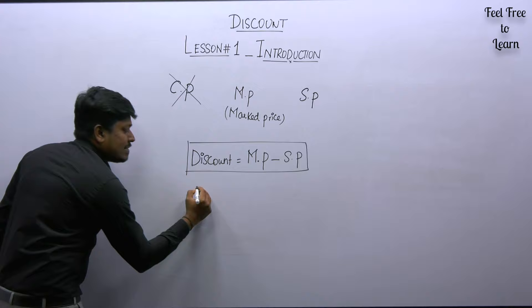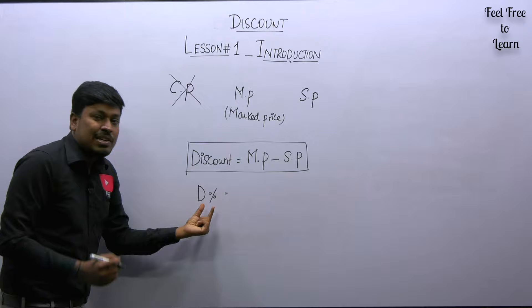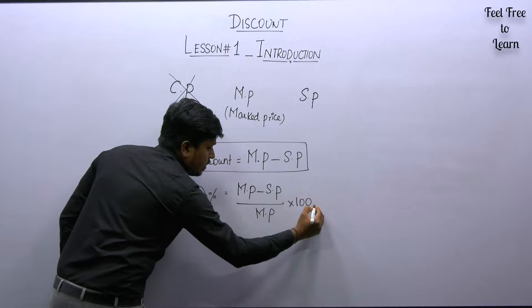To find the discount value, use: Discount = Marked Price − Selling Price. To find the discount percentage, the formula is: Discount % = (Marked Price − Selling Price) ÷ Marked Price × 100.